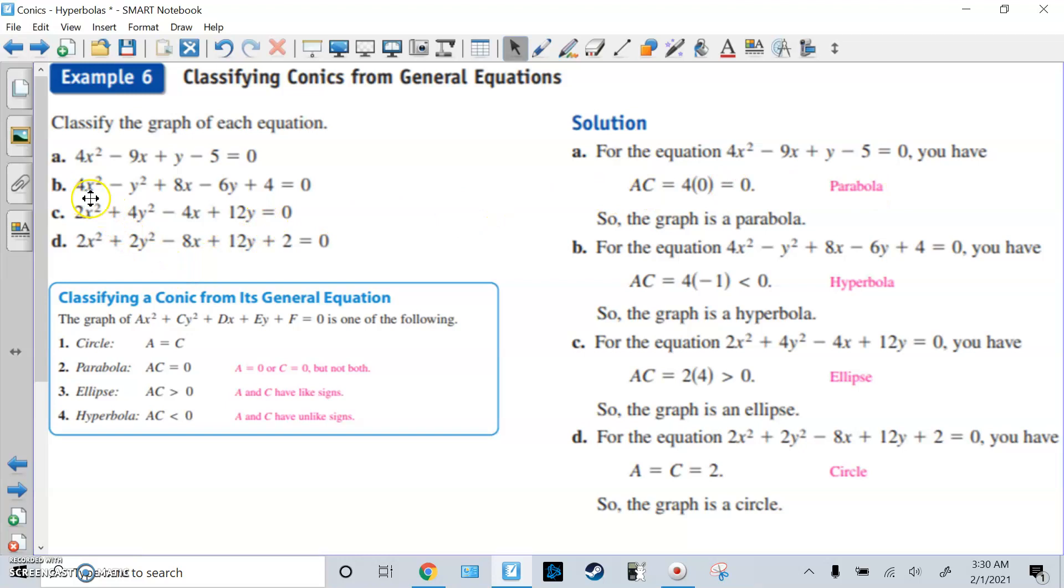Part b: we have 4x squared, negative 1y squared. They are different, but 4 times negative 1, that's a negative number, negative 4. That's smaller than 0. That's a hyperbola, because we have subtracting and there can be different a and b values.